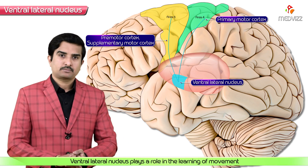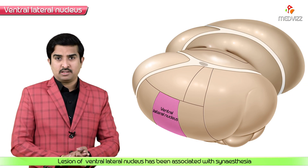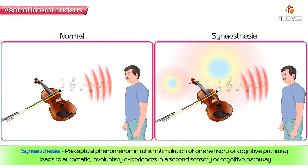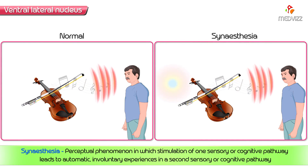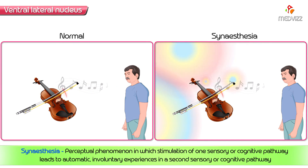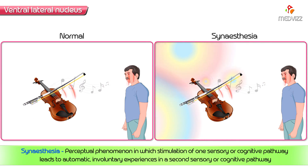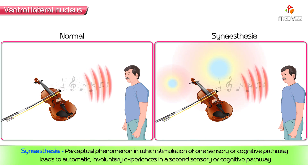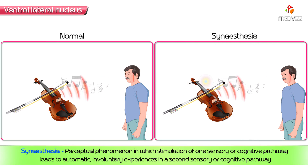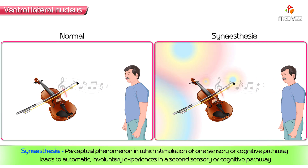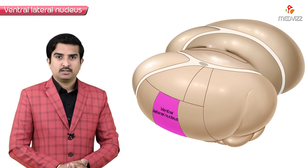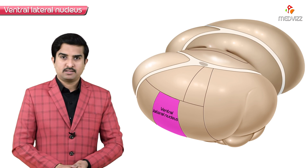The ventral lateral nucleus plays an important role in learning movement, along with the cerebellum, cerebral cortex, and basal ganglia. A lesion in the ventral lateral nucleus has been associated with synesthesia — a perceptual phenomenon in which stimulation of one sensory or cognitive pathway leads to automatic, involuntary experiences in a second sensory or cognitive pathway. People who report a lifelong history of such experiences are known as synesthetics.